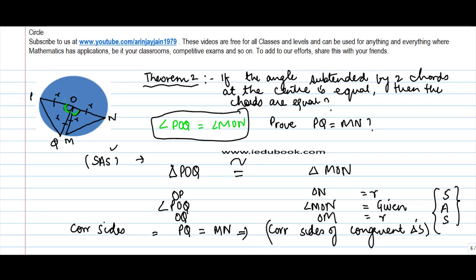So thus, the learning in this theorem is that if the angle subtended by the two chords at the center are equal, then the chords themselves are equal.